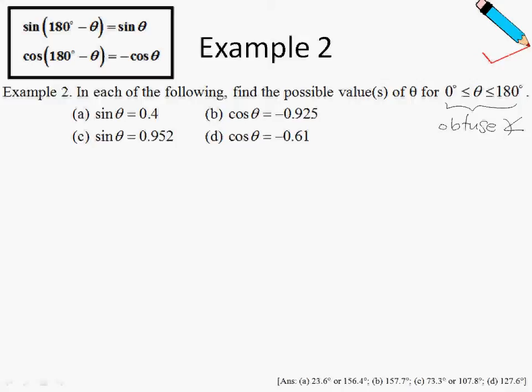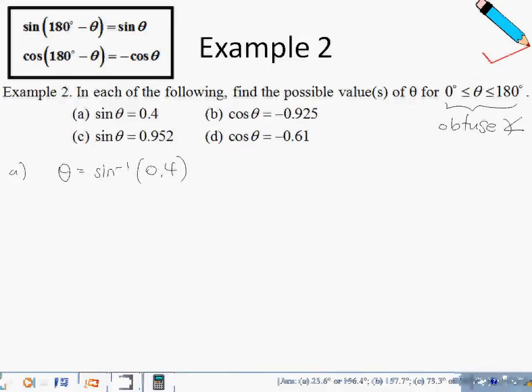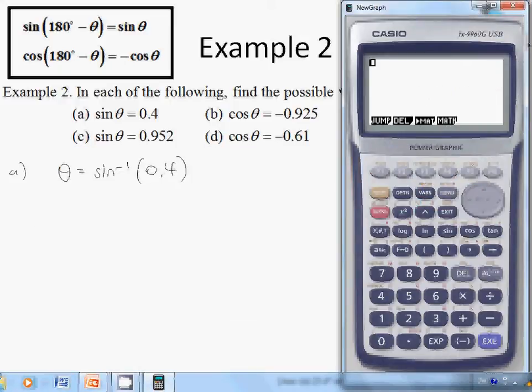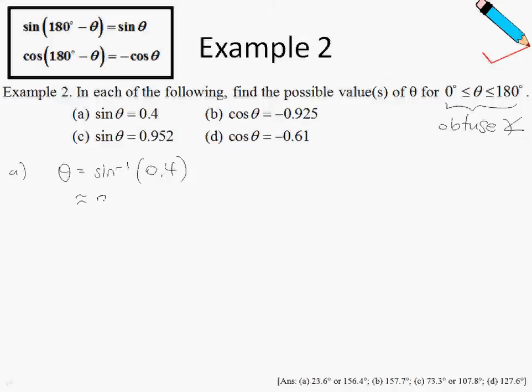For part A, to find theta, we take sine inverse. You learned this in the earlier part of the chapter. So theta equals sine inverse of 0.4. To press this in the calculator, press the shift button followed by sine to get sine inverse, then enter 0.4 and press equals. This gives approximately 23.6 degrees.